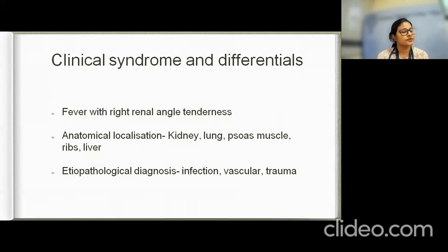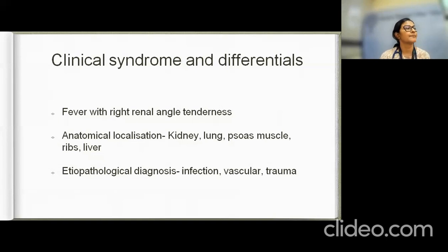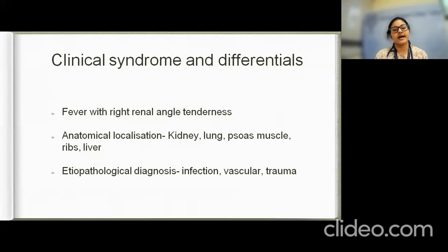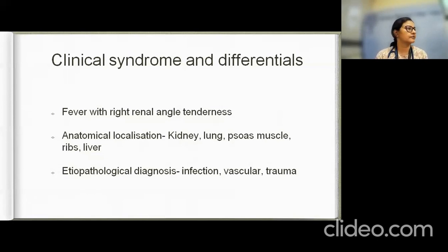The localization was considered musculoskeletal, with soft tissue involvement given the warmth and tenderness along the medial and distal aspect of the leg. Differentials considered included pyelonephritis (unlikely given no dysuria), psoas abscess to explain the right renal angle tenderness, vascular causes such as renal vein thrombosis and pulmonary embolism, and trauma such as rib fracture.